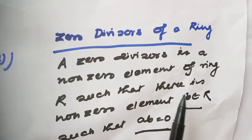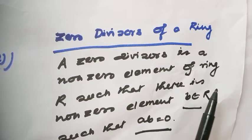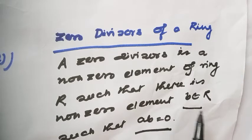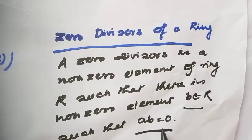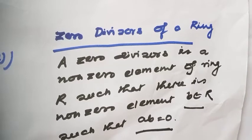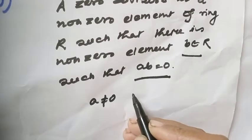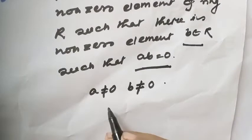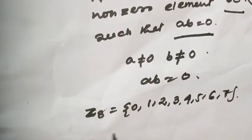Now I will introduce a new concept: zero divisors. A zero divisor is a non-zero element a of the ring R such that there exists a non-zero element b in R such that their product a·b is equal to zero. That means a ≠ 0, and there exists b in R with b ≠ 0, but their product equals zero.